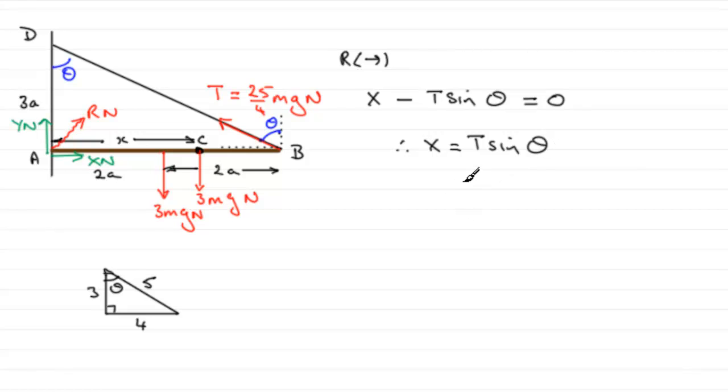And if we just put in our values for T, T is 25 over 4 mg, we've got 25 over 4 mg. The sine of theta, well we can take it from this triangle, the 3-4-5 triangle. Sine compares the opposite over the hypotenuse, so that's going to be 4 fifths.